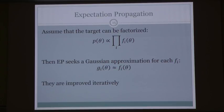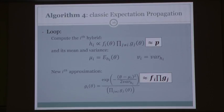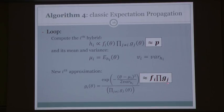To apply expectation propagation, I make the additional assumption that the target p has been factorized into n functions f_i. For each f_i, we compute a corresponding Gaussian approximation g_i, and improve them iteratively. The classical EP algorithm: first compute the hybrid h_i — the product of f_i times the product of the Gaussian approximations to all other factors, which is approximately equal to p. Then compute the mean and variance of h_i and the Gaussian with the same mean and variance. Dividing by the product of g_j gives a new Gaussian approximation to f_i. This is the classical EP algorithm as presented by Minka.